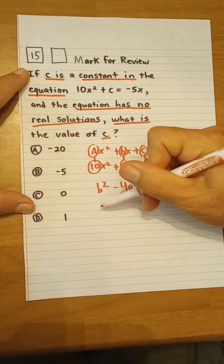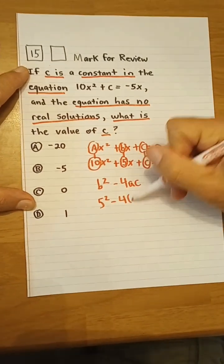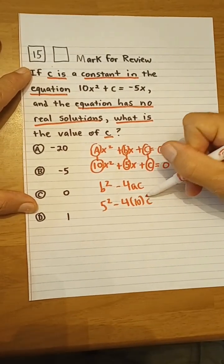Here our b is 5, so 5 squared minus 4 times 10 times c.